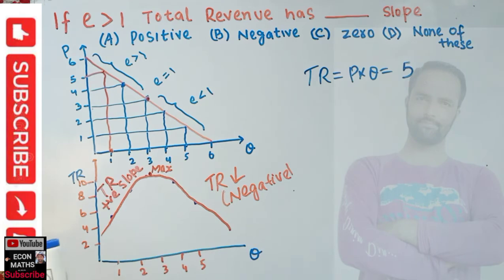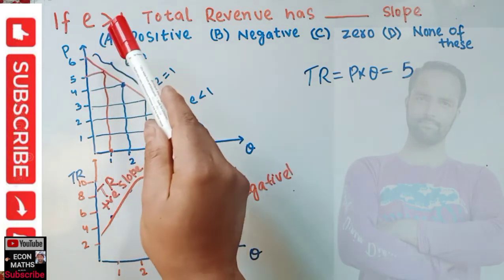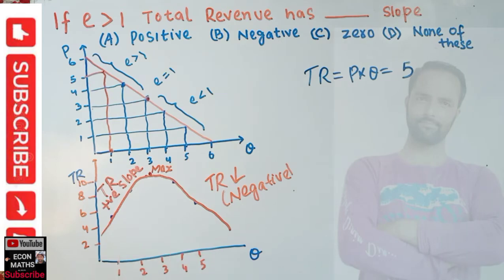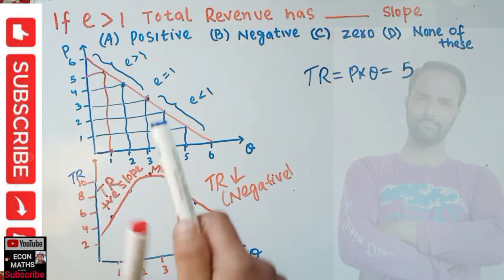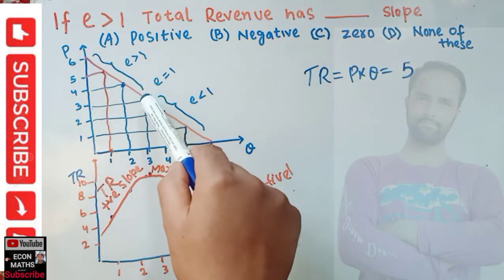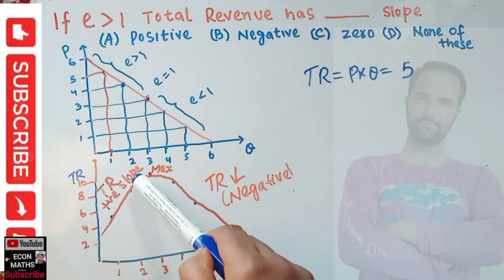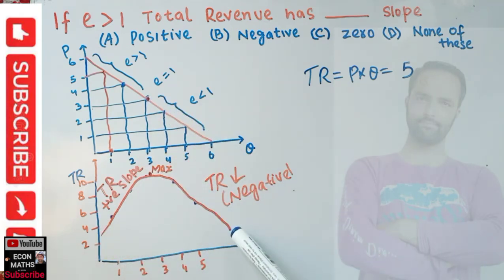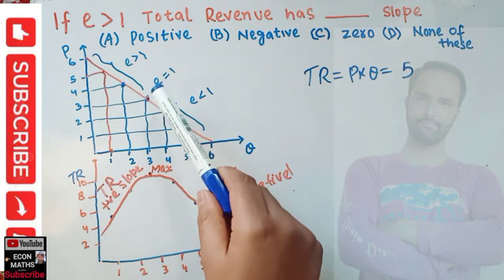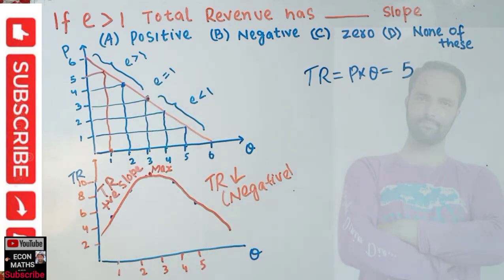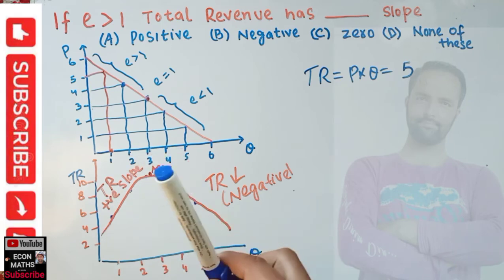So the answer to the question: if elasticity is greater than one, total revenue has a positive slope — meaning total revenue increases as price falls. When we are in the lower half segment, total revenue decreases. And when we have unit elastic demand, total revenue is at its maximum.